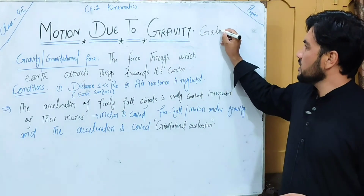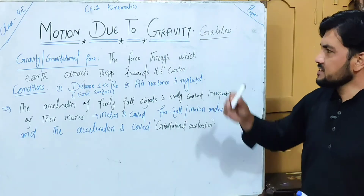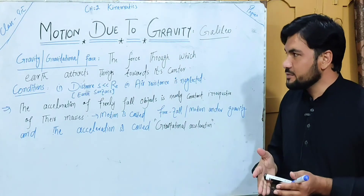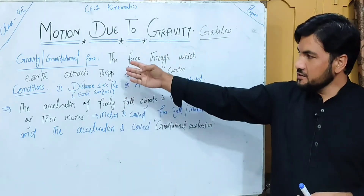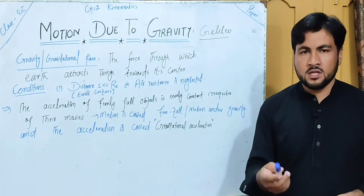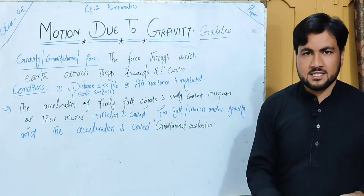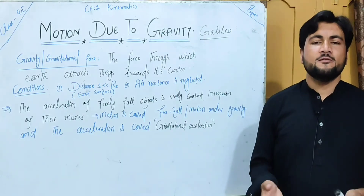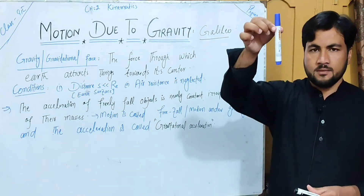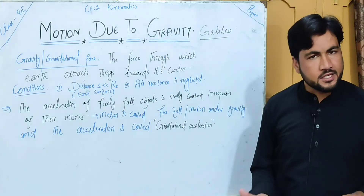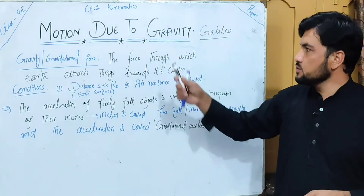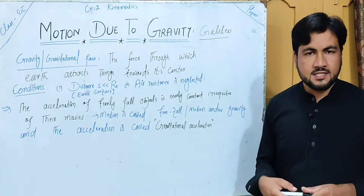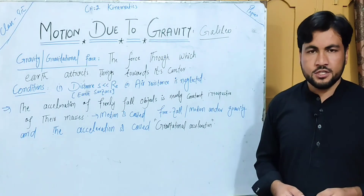The motion due to gravity — when an object moves toward the earth, the motion is caused by the gravitational force of the earth. This motion is due to gravity.